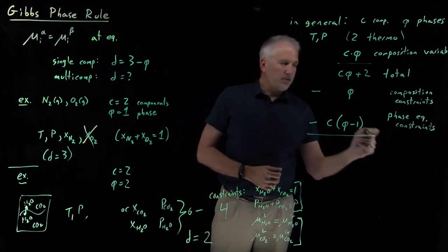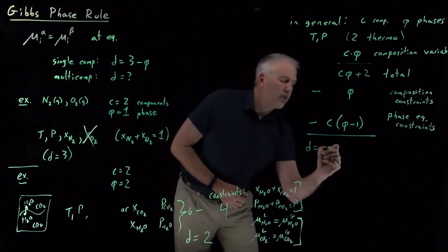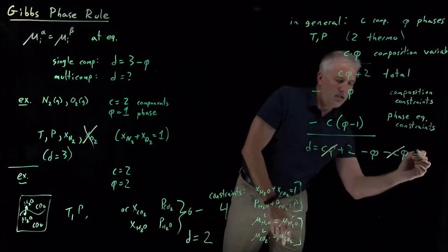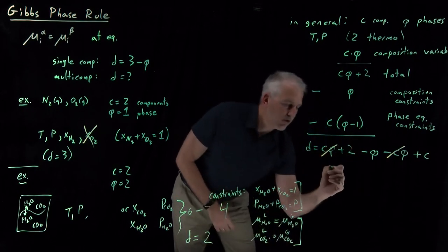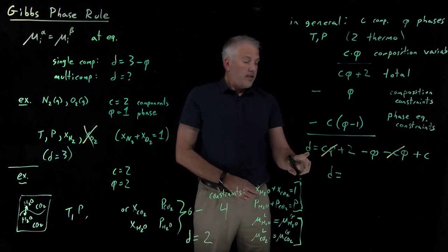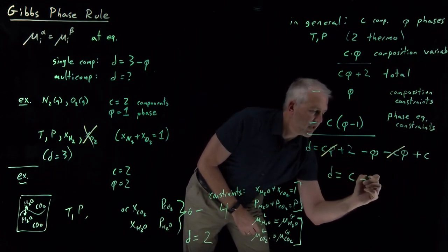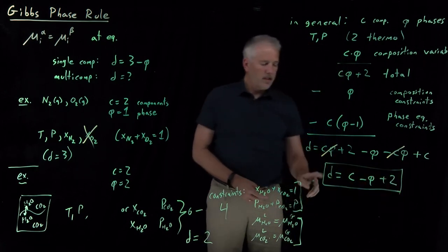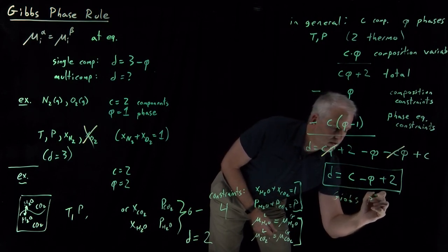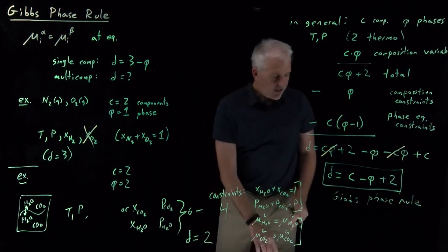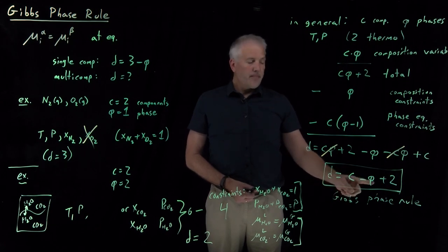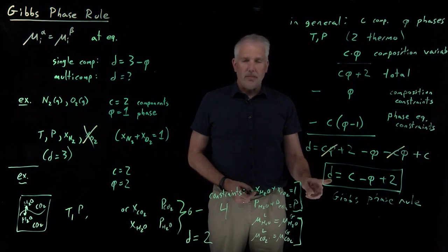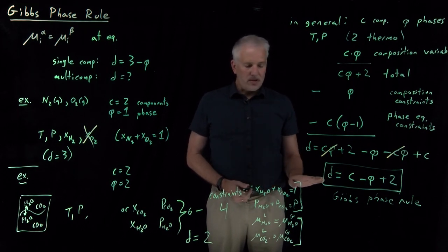Taking the total number of variables and subtracting all the constraints: D = Cφ + 2 − φ − C(φ − 1), which simplifies to D = C − φ + 2. That's the Gibbs phase rule. It allows us to predict, for a multi-component system with C components in equilibrium between φ phases, how many degrees of freedom we can specify independently. We'll do a few examples next to verify and explore what this equation tells us.